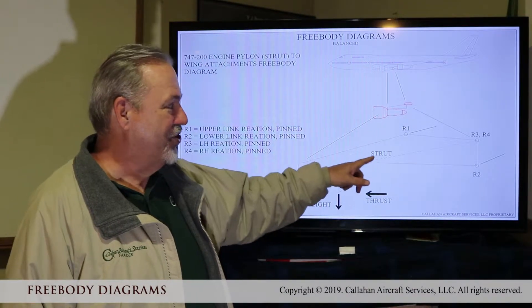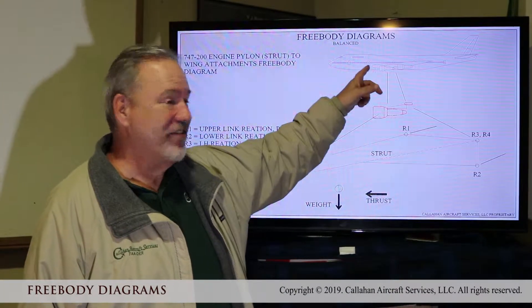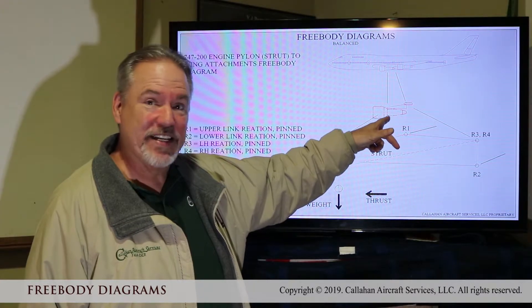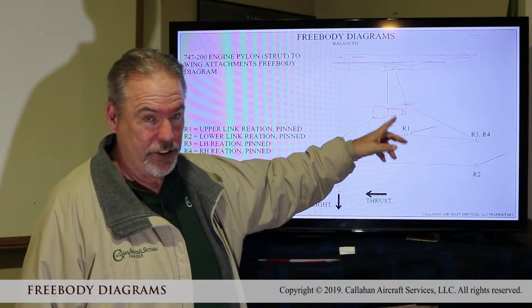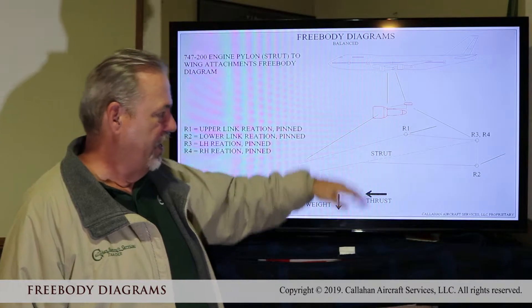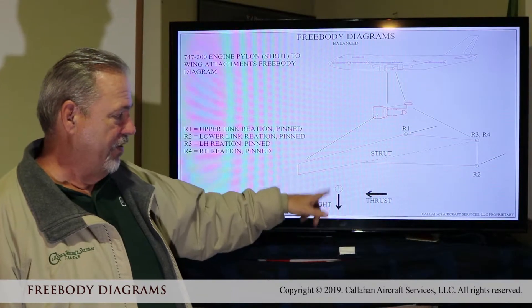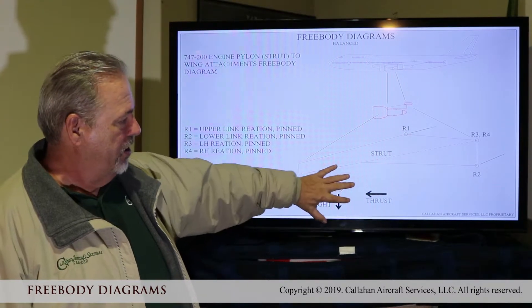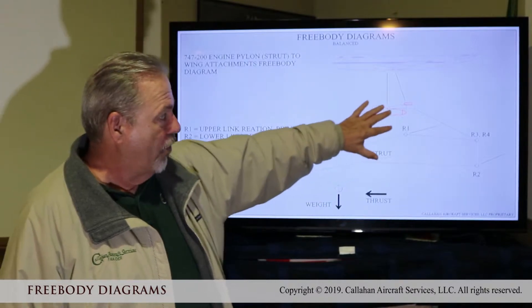This is an engine strut on a 747 that holds this 60 kip engine. Got to 62 kips before I left Boeing. We have thrust down here, we have the weight of the CG of the engine. Engines way forward of the wing.